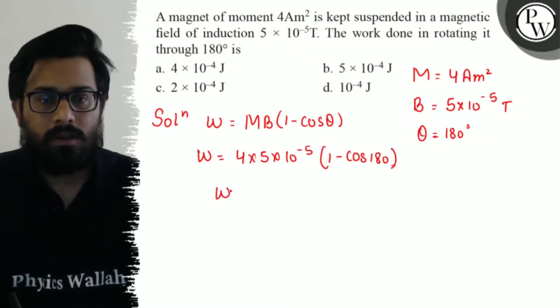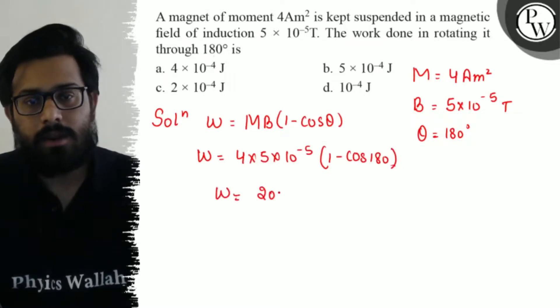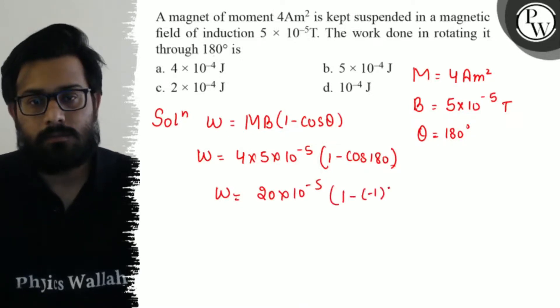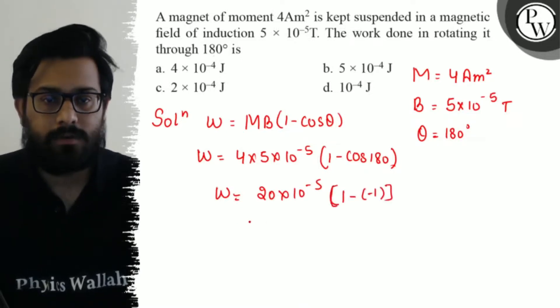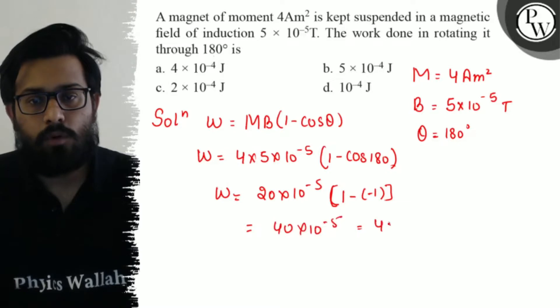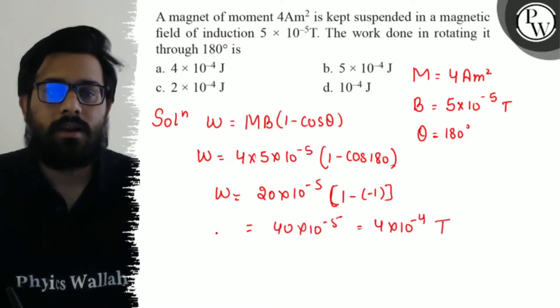Solving it further, it comes out to be 20 × 10⁻⁵ × (1 - (-1)), since cos 180° is -1. This equals 40 × 10⁻⁵ or 4 × 10⁻⁴ joule, which is the right answer.